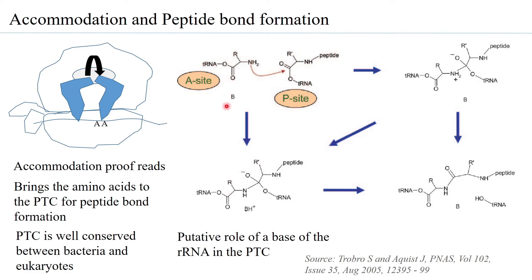When the peptide bond is formed, a base present in the rRNA can take up a proton, demonstrating that the rRNA plays an important role in the peptidyl transferase center and is responsible for catalyzing peptide bond formation.